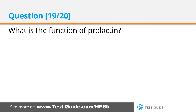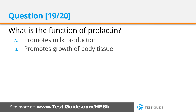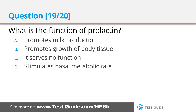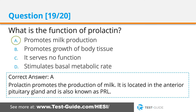Question nineteen: What is the function of prolactin? Options: promotes milk production; promotes growth of body tissue; serves no function; stimulates basal metabolic rate. Correct answer A. Prolactin promotes the production of milk. It is located in the anterior pituitary gland and is also known as PRL.